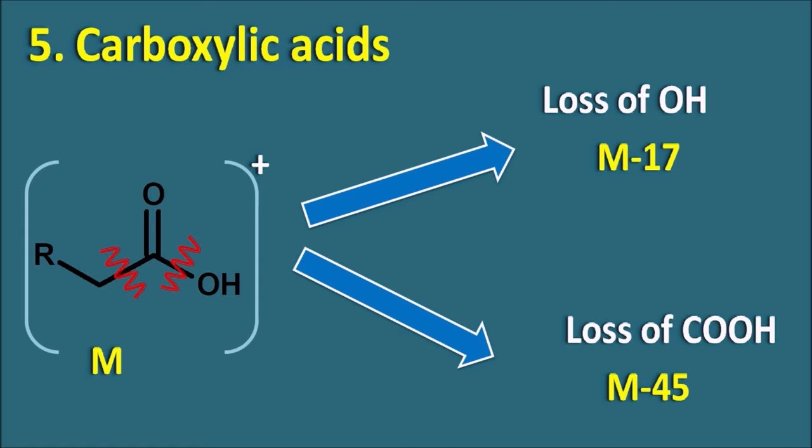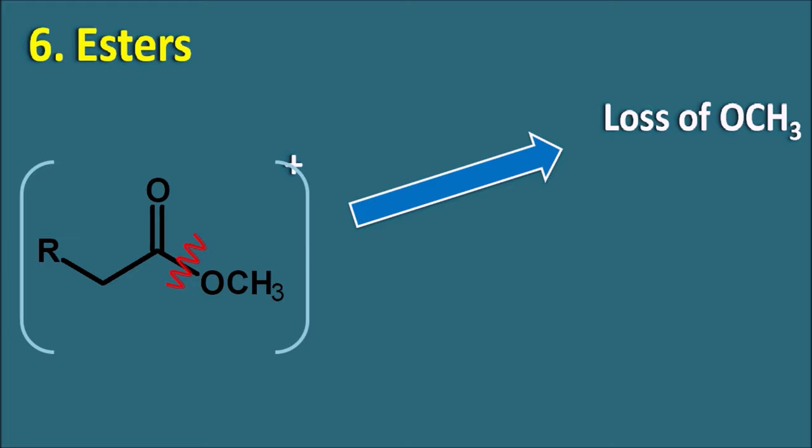Carboxylic acids can also show McLafferty rearrangement at m/z 60. For esters: they can undergo fragmentation to produce loss of the OCH3 group — oxygen (16) plus CH3 (15) equals 31 — so this fragment ion is observed at M-31. Esters can also undergo fragmentation to release the acyl ion. They also show McLafferty rearrangement observed at m/z 74.